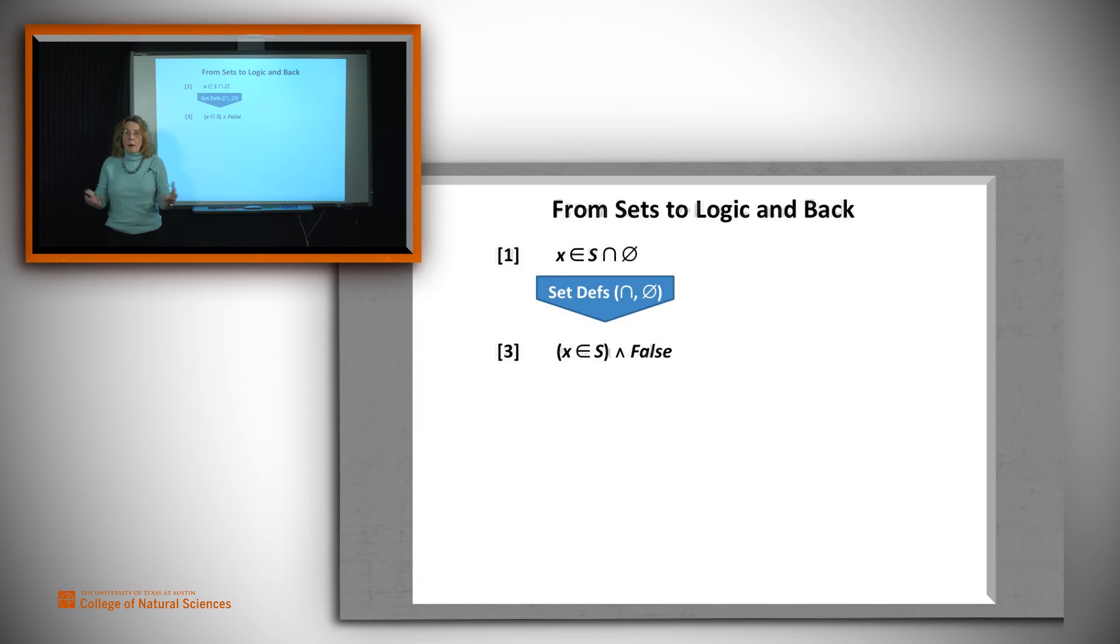Now we have a logical claim. Now we can use all the standard tools of Boolean logic. Reason. And in this case, we're going to derive, via only a single step, the claim false. You'll see why in a minute.